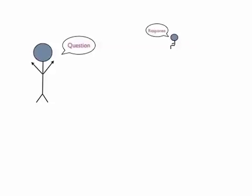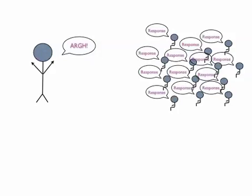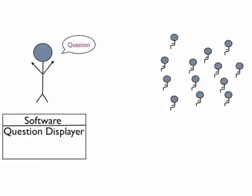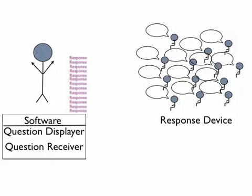You're all familiar with the standard process of an instructor asking a question and the student providing a response. But what if you get a whole lot of responses? How constructive is that? A student response system is a way to easily and quickly capture and organize student responses. It consists of three basic components: a software package that displays the question, a response device that enables students to respond, and a receiver that captures the responses and passes them to the software. The software then stores, organizes, analyzes, and reports on the responses.